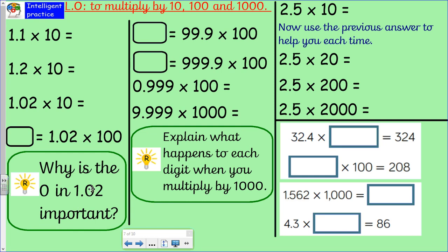Reasoning question then, I would like a little explanation. Why is the zero in 1.02 important? You're going to need to use some words there. Same thing in this middle column. Do not get confused by the box being at the beginning. They do that on your stats test every time to trick you, don't let them trick you.